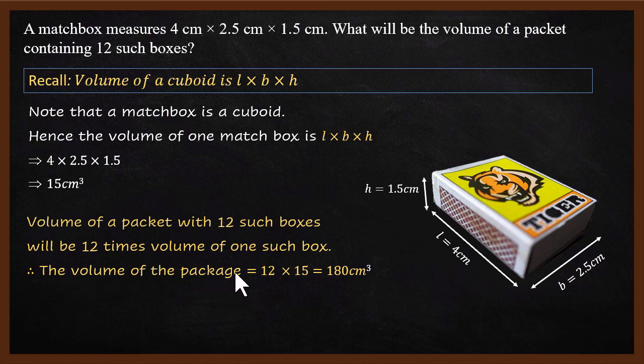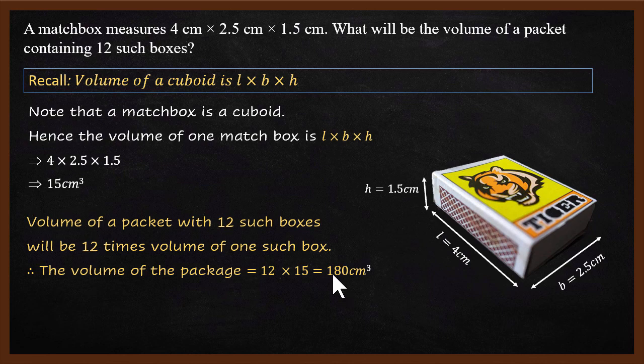The volume of the package with 12 boxes is given by 12 times 15. So, what is 12 times 15? It is 180 centimeter cube. This is a simple surface area and volume problem.